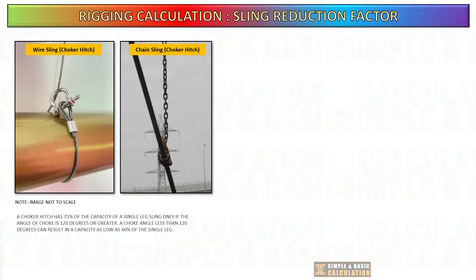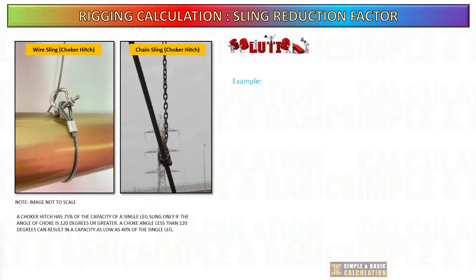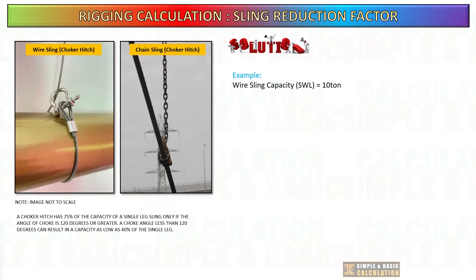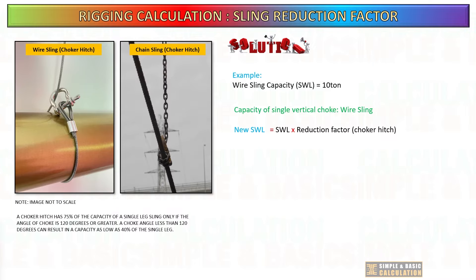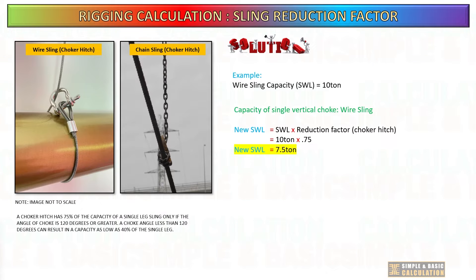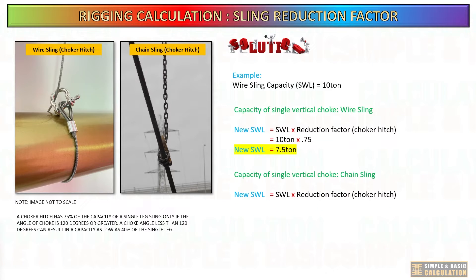Example: let's determine the reduction factor for wire slings and chain slings when used for a single vertical choker hitch. Let us assume the wire sling capacity or SWL is 10 tons. To calculate the new safe working load (SWL) for both wire slings and chain slings, simply multiply the original SWL of the sling by the reduction factor. The wire sling has a reduction factor of 75 percent, while the chain sling has a reduction factor of 80 percent.